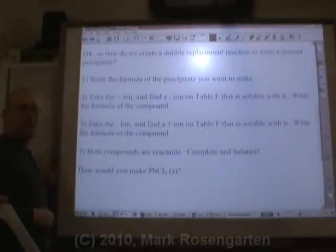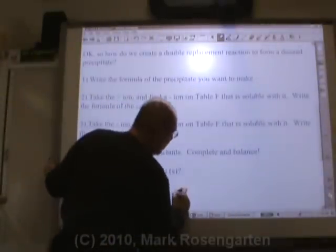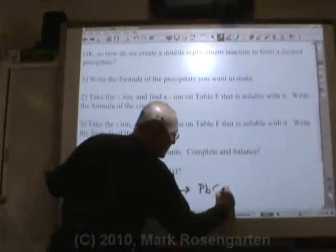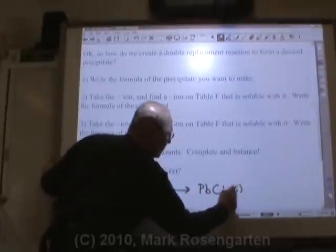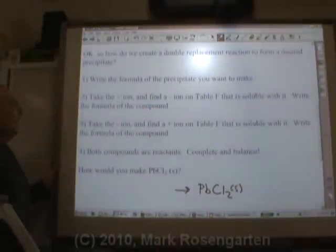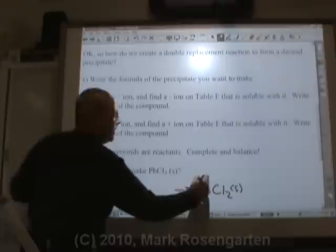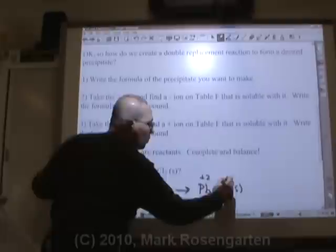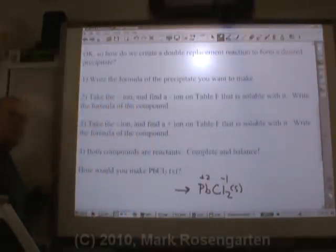First, write the formula of the precipitate you want to make. It's going to be a product. So I'm going to put it over here, PbCl2. Now we're going to take the positive ion, lead is plus two, and the negative ion, minus one, and we're going to split them apart, Pb plus two, Cl minus one.